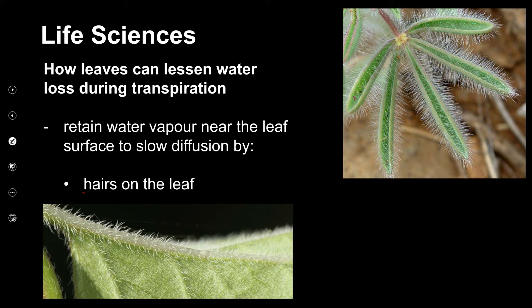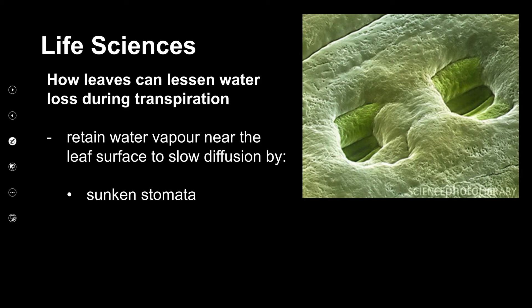Here we have hairy leaves — you can see quite clearly all the hairs, even in the non-magnified picture. The next way plants can retain water vapour is to have their stomata sunken. Looking at this diagram, the stoma is inside a hole — this is called a sunken stomata — and water vapour gets trapped inside this little hole, which helps lessen water loss.